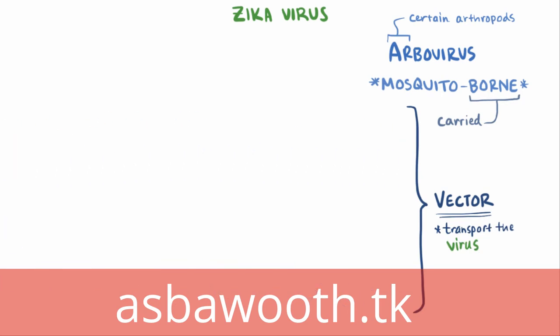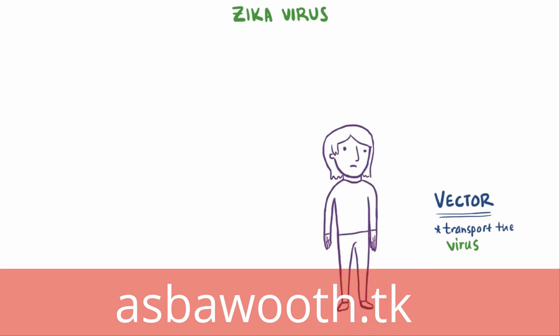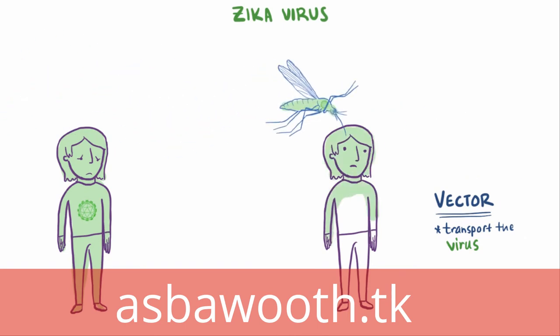With Zika virus, just like other mosquito-borne viruses like dengue fever, yellow fever, Japanese encephalitis, and West Nile virus, the mosquito acts as a vector that transmits the virus from one person to the next. These viruses are all in the genus Flavivirus.